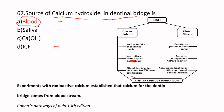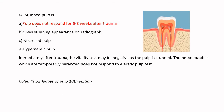A stunned pulp is one where immediately after trauma the vitality test is negative because the nerve bundles are temporarily paralyzed. The pulp is shocked and does not respond to the electric pulp test. There is no characteristic standing appearance on the radiograph. A necrosed pulp or hyperemic pulp would not be described as stunned.